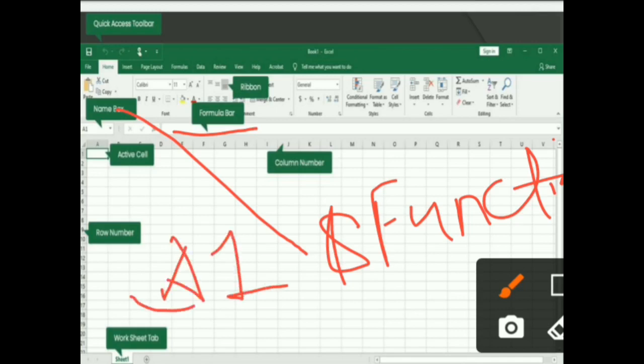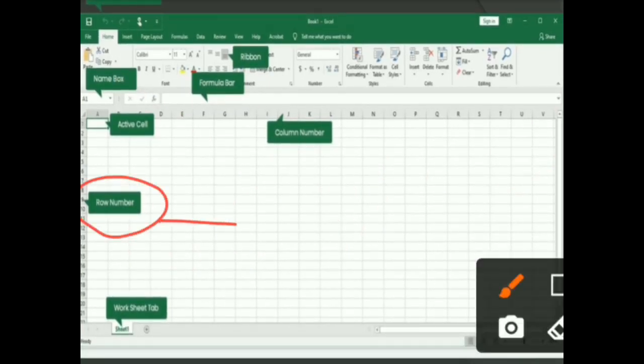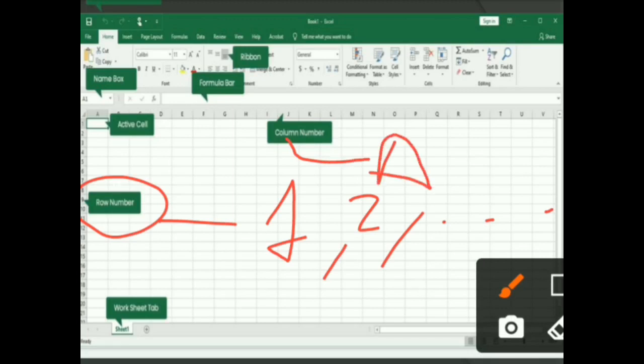A1, here A is the name of the column and 1 is the name of the row. Rows are numbered from 1 to the last number. Last name of the last column is XFD.